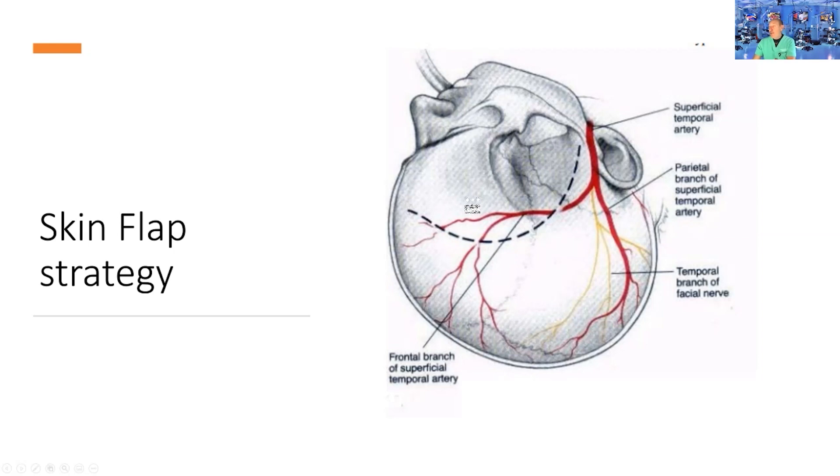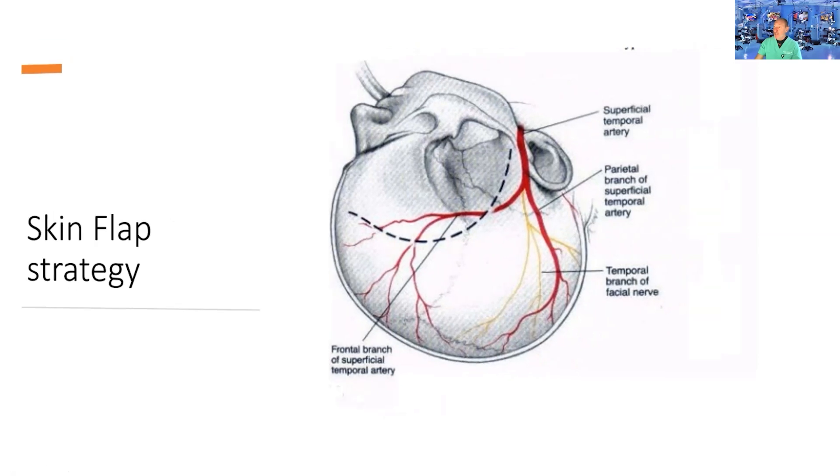You're trying to avoid the frontalis branch of the facial nerve. You come across the parietal branch of the superficial temporal artery. The most important thing is to spare the main trunk of the STA because you can use it as a donor for a bypass if needed.